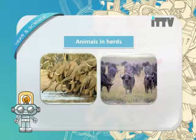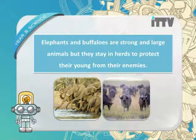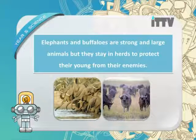Some strong, large animals move in a large group and are never seen alone. Examples are elephants and buffaloes, which travel in a big herd. They stay in herds to protect their young from enemies. When one elephant or buffalo wanders away from the herd, lions or other predators take the chance to attack. Staying together makes it much more difficult for predators like lions, tigers, or leopards to attack.